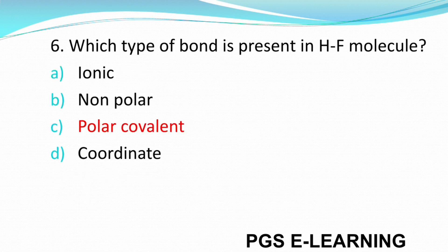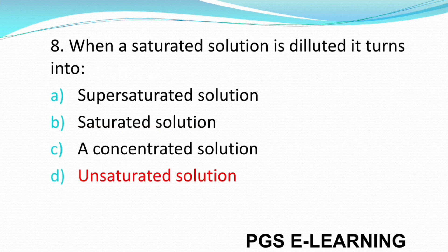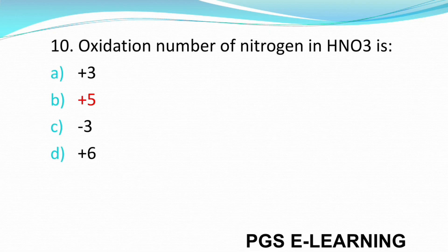Q5: How many electrons does a triple covalent bond involve? Six. Q6: Which type of bond is present in HF molecule? Correct answer is polar covalent. Q7: The density of ice at 0 degrees centigrade is 0.917 grams per centimeter cube. Q8: When a saturated solution is diluted, it turns into an unsaturated solution.